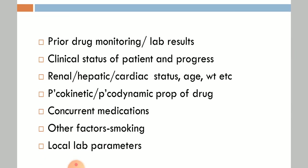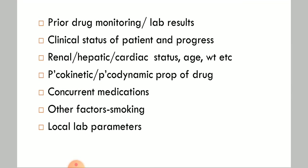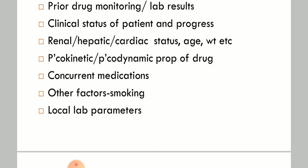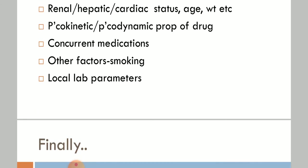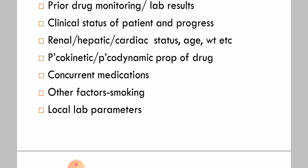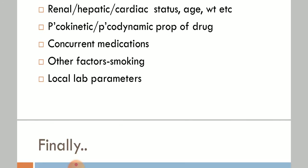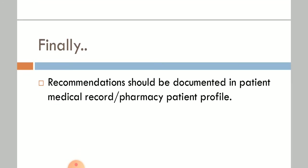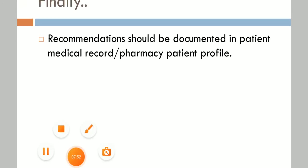Additional factors for interpreting TDM results include prior drug monitoring lab results, clinical status of the patient, hepatic, renal, and cardiac status, age, response, kinetic and dynamic properties of the drug, concurrent medication, and other factors like smoking and local lab parameters. This concludes the section on clinical review and drug therapy monitoring.